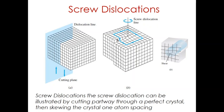The screw dislocation can be formed in a perfect crystal by applying upward and downward shear stresses to regions of a perfect crystal that have been separated by a cutting plane. These shear stresses introduce a region of distorted crystal lattice in the form of a spiral ramp of distorted atoms — the screw dislocation. The region of distorted crystal is not well defined and is at least several atoms in diameter.